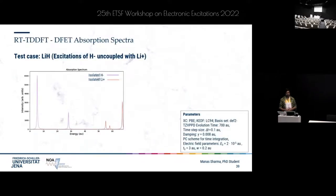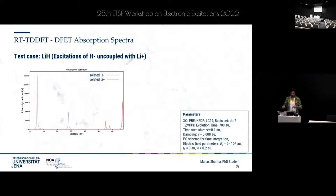Coming to RTTDDFT coupled with DFET: I propagate the density of the cluster in time in the presence of the embedding potential. The environment density is kept frozen to the ground state density while the cluster density evolves in time. Such a method works best for cases where the environment does not respond to excitations of the cluster. I will consider two representative cases: LiH, where excitations of H⁻ and Li⁺ are uncoupled, and a benzene-fulvene dimer where the excitations are coupled.